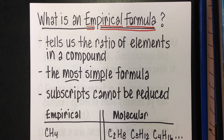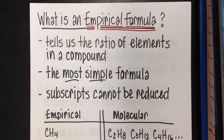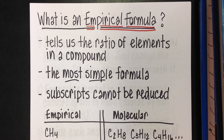This lesson is going to teach you how to calculate the empirical formula for a compound. Let's say you are at a crime scene and you find a white powder and you need to know what it is. You could take that powder to a lab, have it analyzed, and get information back that breaks the compound down into percentages — like 30% carbon, 20% hydrogen, and 50% oxygen. You can use those percentages to find the ratio of atoms within that compound — the most simple formula — and that's what an empirical formula is.